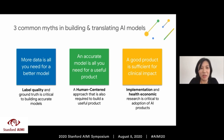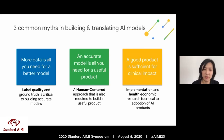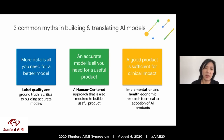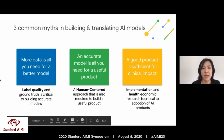In summary, the three common myths: First, more data is all you need — the truth is label quality and ground truth are critical. Second, an accurate model is all you need for a useful product — a human-centric approach is required. Third, a good product is sufficient for clinical impact — we really need to focus on implementation and health economics research to realize the big opportunities AI and healthcare offer.